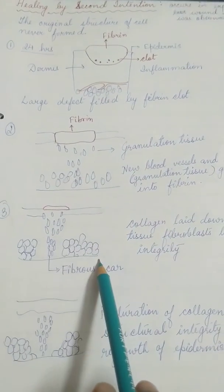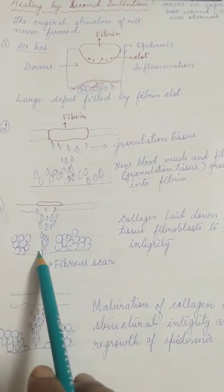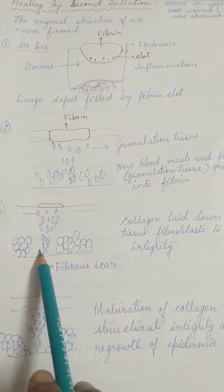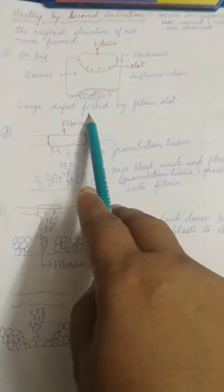In the third stage, what happens is a fibrous scar develops. In case of primary intention, no scar was developed, and in this, inflammation is observed.